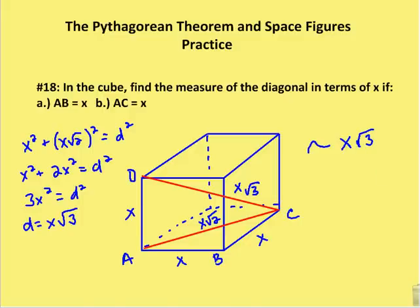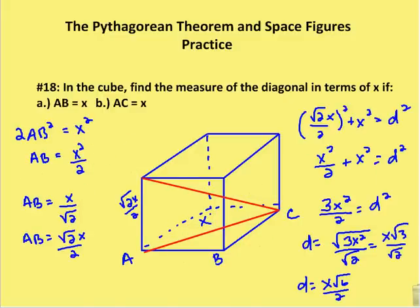Next problem. In the cube, find the measure of the diagonal in terms of x if AC is x. So now I say AC, the face diagonal is x. I need to figure out what, in this case, DC is going to be. Well, if this value here is x, I know this is a right angle.